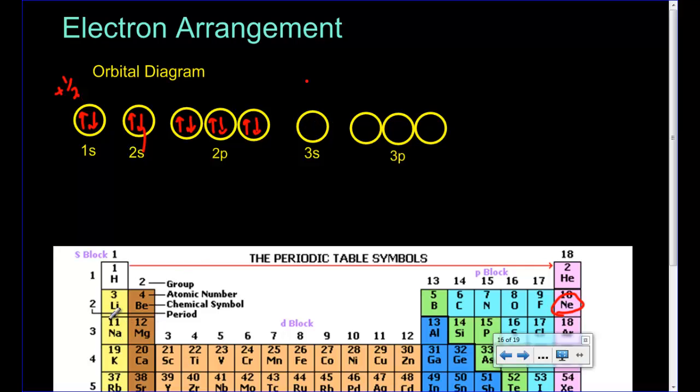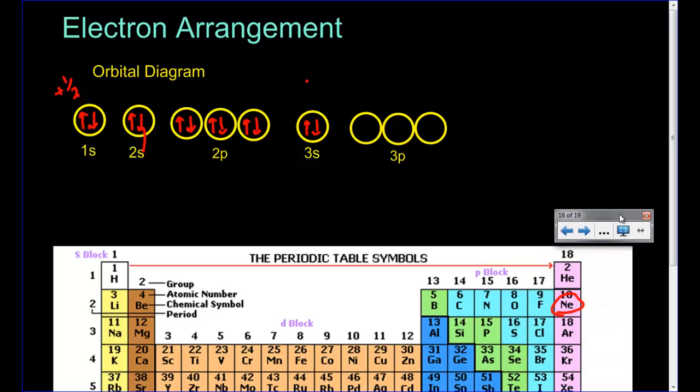Then we jump down to the third energy level. And we start out with sodium. Sodium is going to have one electron. Move over to magnesium. That's going to have two in that 3S. And as we move all the way across to argon, it should look a lot like neon. Got to move all the way across, then come back and pair them up. And when we get to argon, argon is going to be completely full.